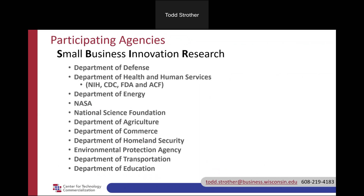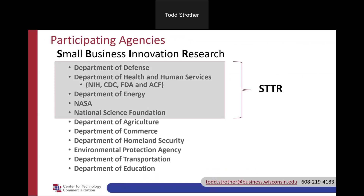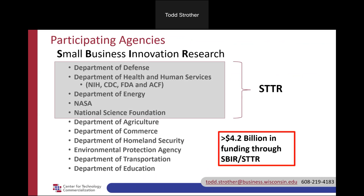These are the 11 agencies that have SBIR money, listed from most to least funding. The Department of Defense has the largest SBIR budget, followed by Health and Human Services — primarily the National Institutes of Health — then DOE, USDA, National Science Foundation, EPA, and Department of Education at the bottom. Six agencies are also mandated to have STTRs — Small Business Technology Transfer — which are very similar to SBIRs but with important differences. You might find an STTR is a better fit. All these funds amount to about $4.2 billion a year.